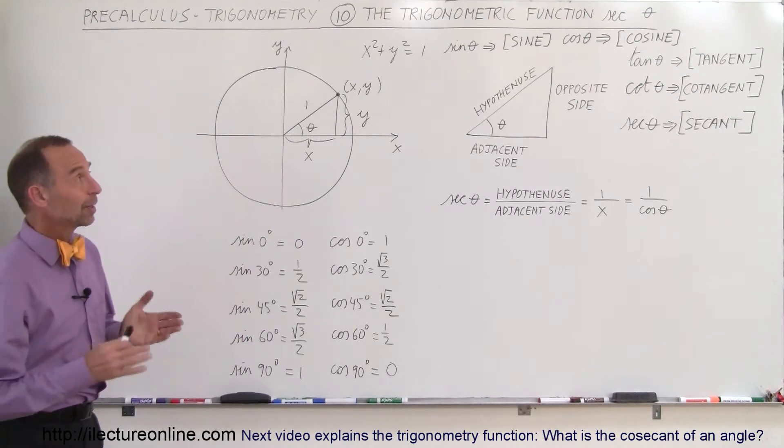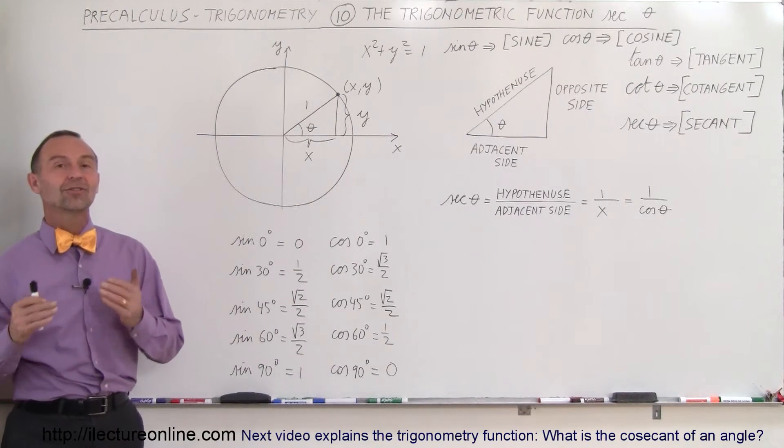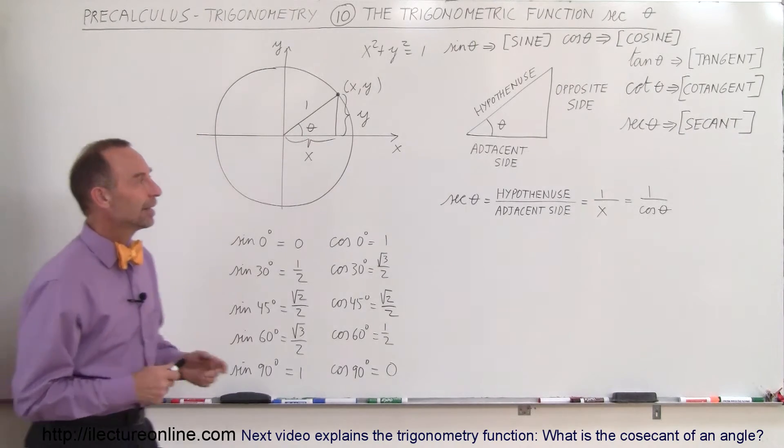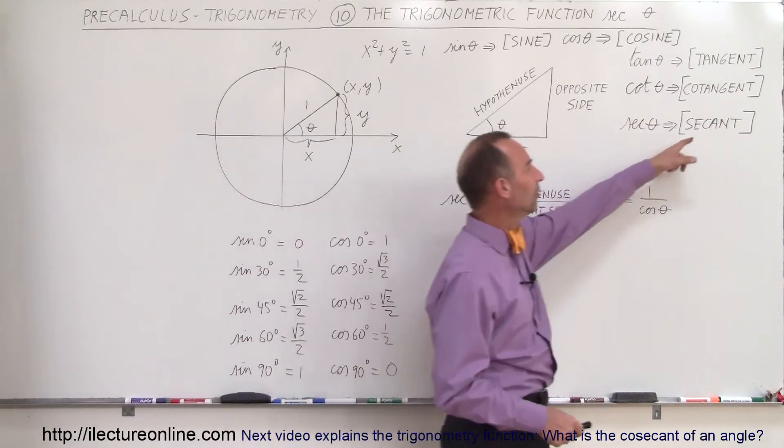Welcome to ElectroOnline. The next trigonometric function we're going to look at is called the secant of theta. And here's how we say the word: secant.